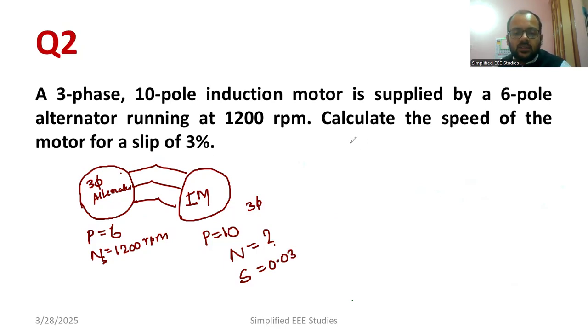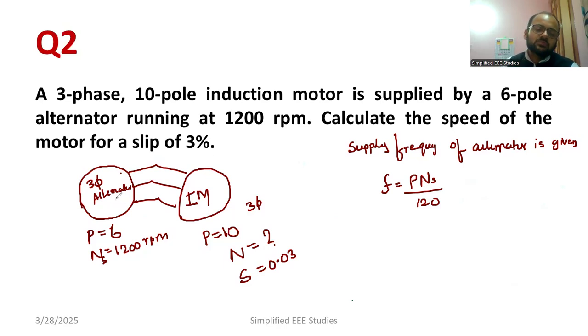First we require the supply frequency of alternator. The supply frequency of alternator is given by F = P*Ns/120. Here P is 6, and the synchronous speed of alternator is 1200. So F = 6*1200/120. Simplifying, this becomes 60 hertz.